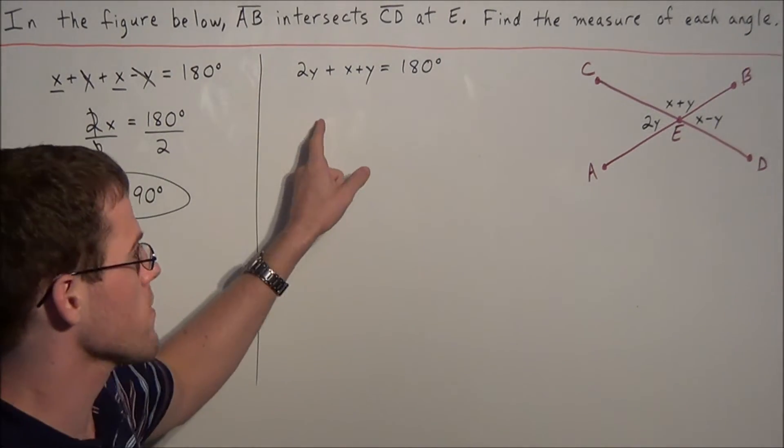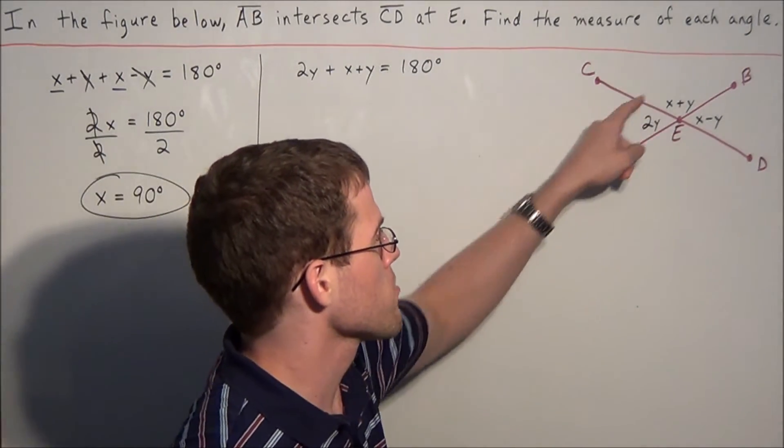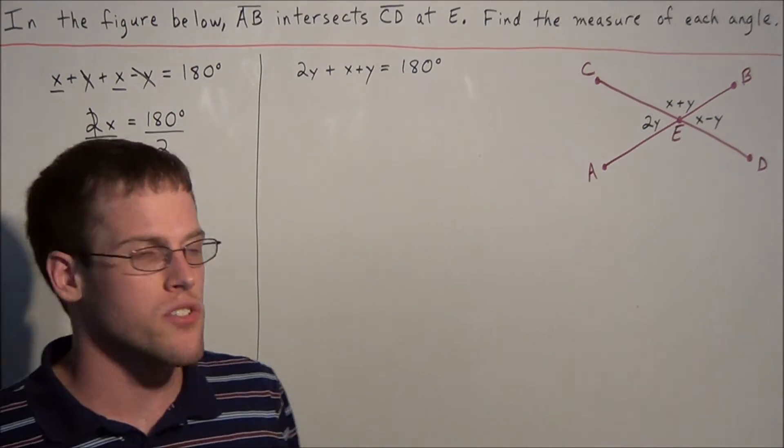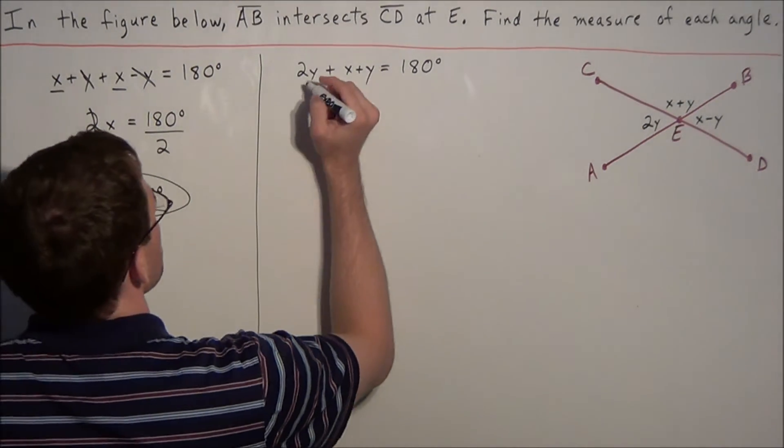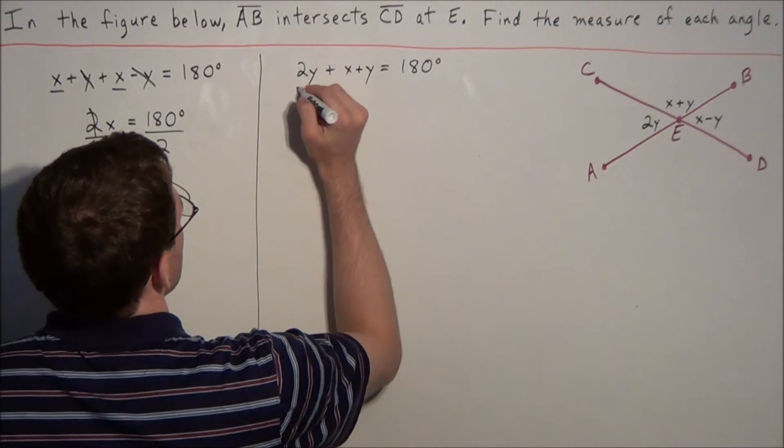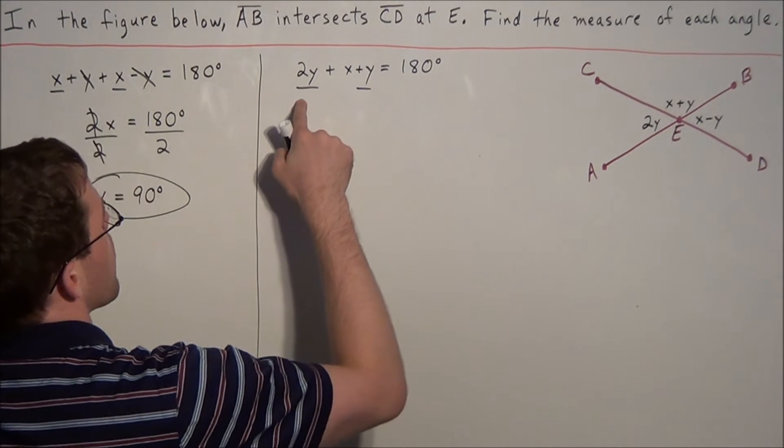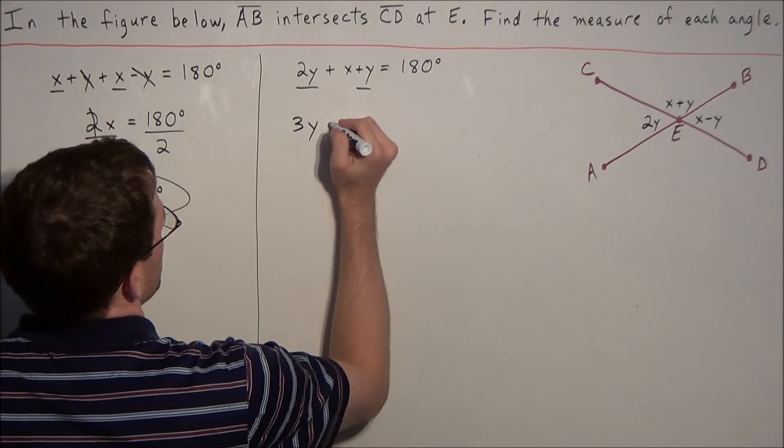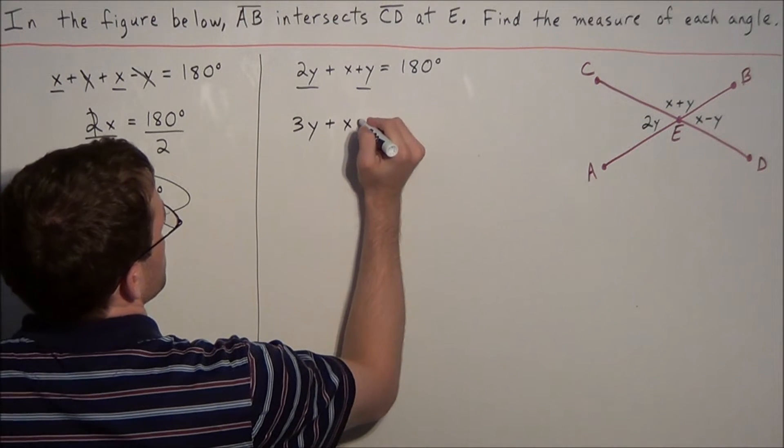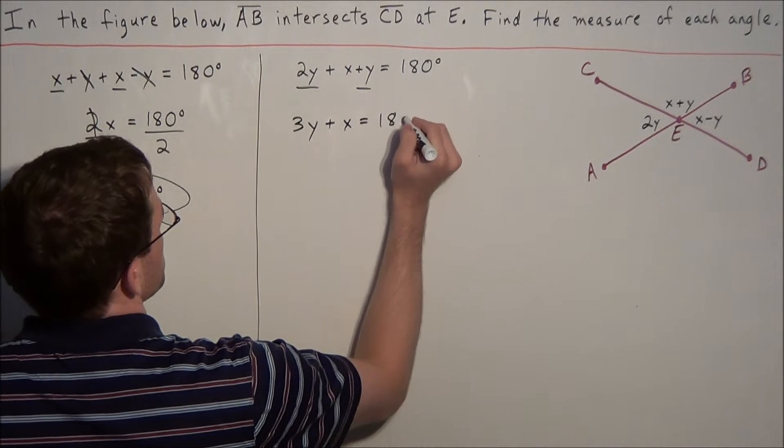When we sum supplementary angles, that quantity is always equal to 180 degrees. For this example, we combine like terms. We have 2Y plus 1Y is 3Y, plus X equals 180 degrees.